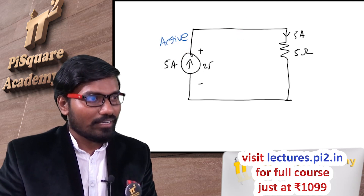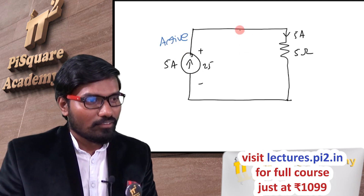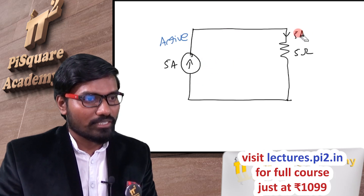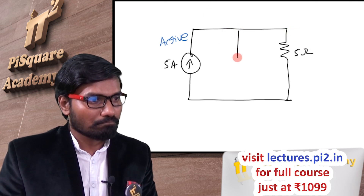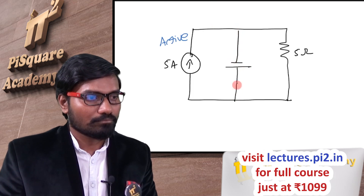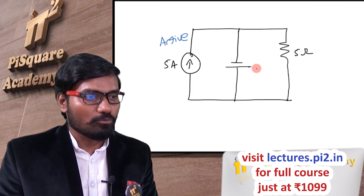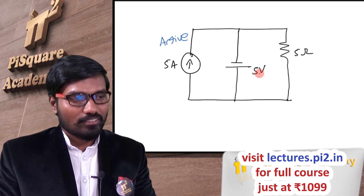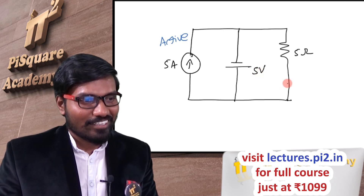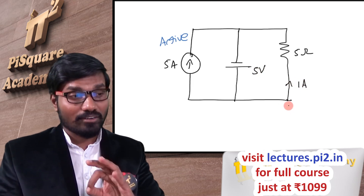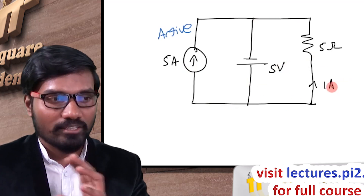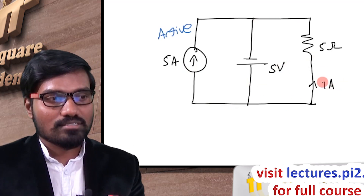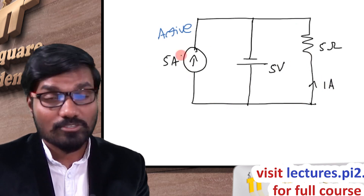Now what if I add an extra element? The numbers and direction may change because the circuit changes. This added element has 5 volts. Now the current in this branch is 1 ampere. My focus is on a simple aspect: this current source can also act as a passive source.